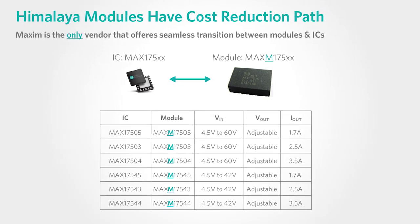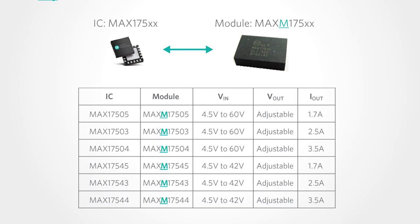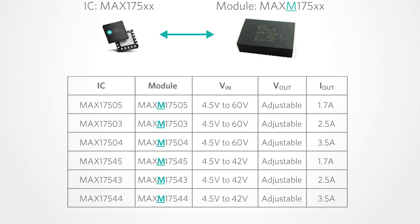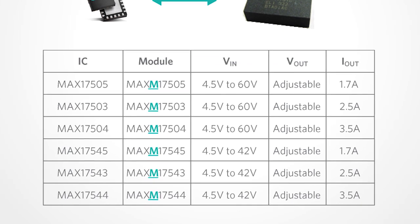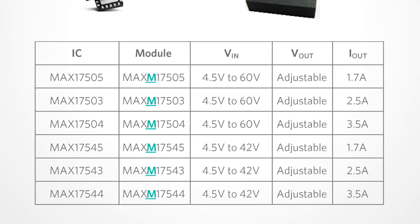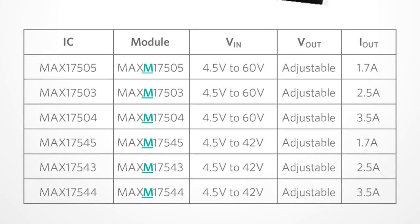For example, if a customer wants to start with modules for fast prototyping or fast time to market, they can start with modules and then move to the equivalent ICs for lower costs to realize lower costs and or optimize performance. And that's possible because we reveal exactly which ICs are used inside of these modules. Overall with the Himalaya modules, it's really changing the notion of what modules should be and what it's capable of.